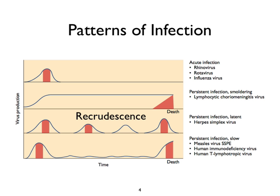Looking at patterns of infection: acute infections are caused by rhinoviruses, rotaviruses, and influenza — you get infected, you get sick, either upper respiratory or enteric, and then you generally get better. There's a wonderful virus of mice called lymphocytic choriomeningitis virus, which led to the discovery of the major histocompatibility locus. It infects the mouse, replicates with no apparent infection for a very long time and very little virus made, and then long after the initial infection, virus begins to replicate and the host dies.